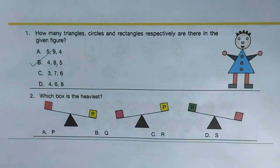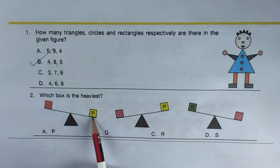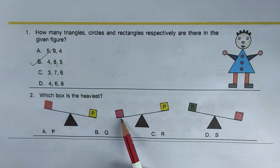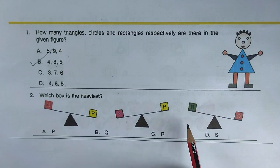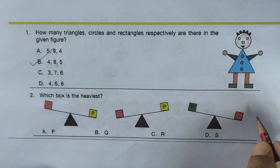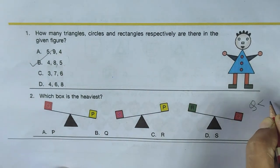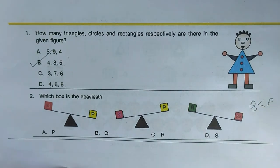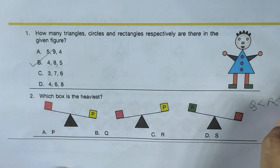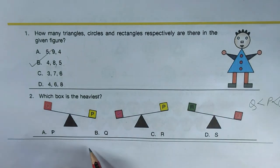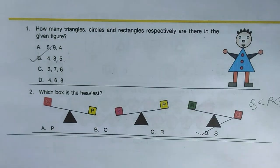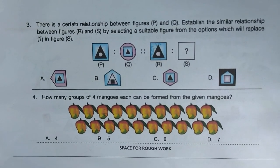Next question: which box is the heaviest? From the clues: P is heavier than Q, F is heavier than P, and Q is heavier than R. Arranging them: R, Q, P, F — so F is the heaviest. Option D is the correct answer.